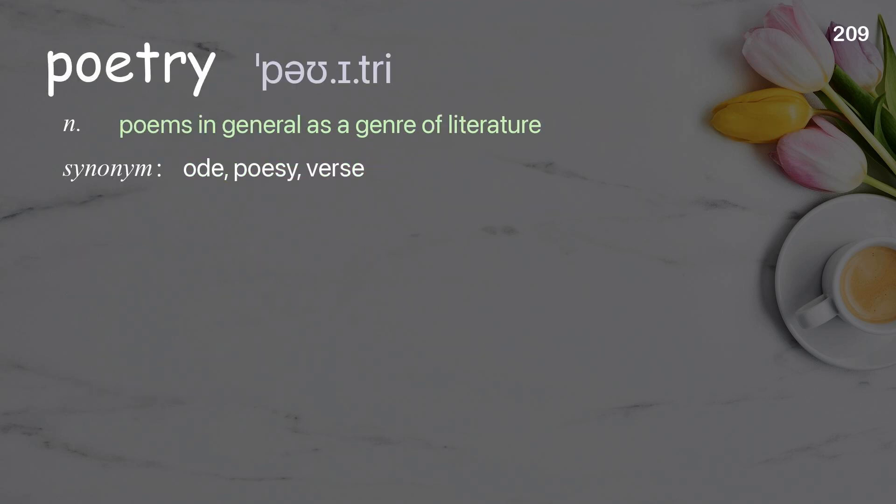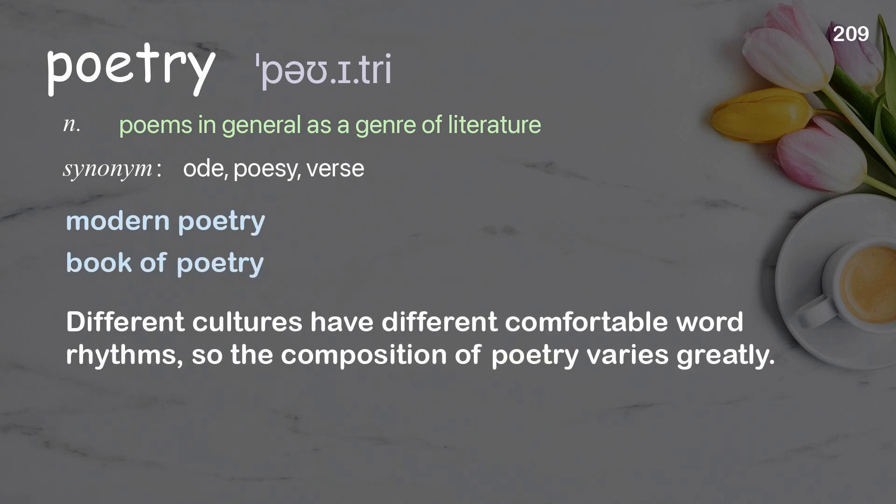Poetry: poems in general as a genre of literature. Examples: modern poetry, book of poetry. Different cultures have different comfortable word rhythms, so the composition of poetry varies greatly.